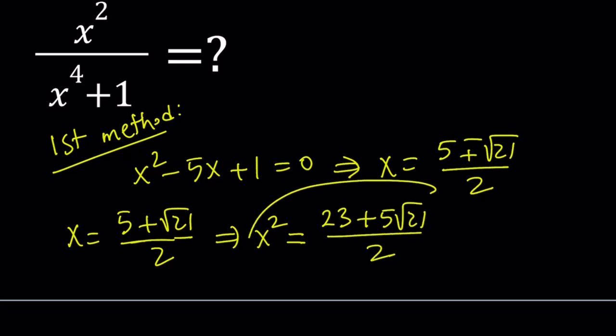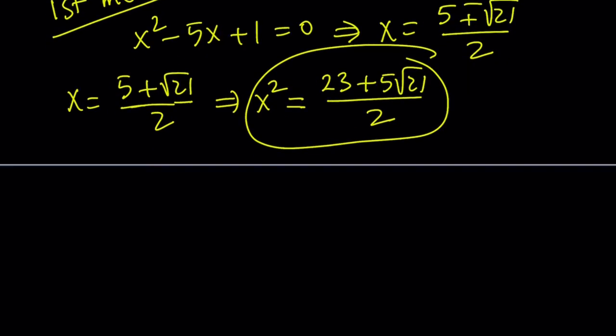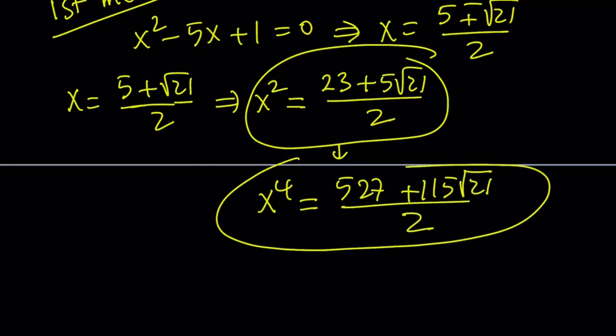I also need x to the fourth power, so let's go ahead and square this one more time. And again, to save you the trouble, I squared it for you and it gives you 527 plus 115 times the square root of 21 over 2. So we got x squared and x to the fourth power.